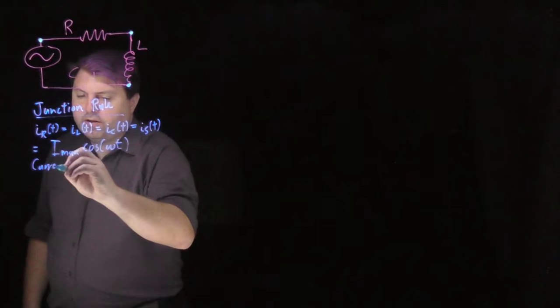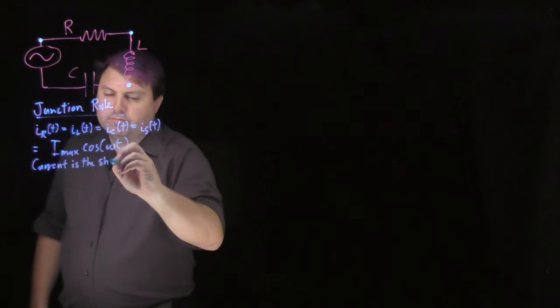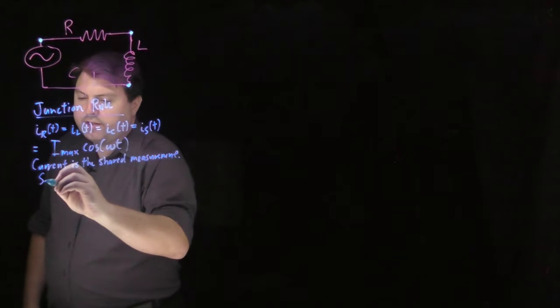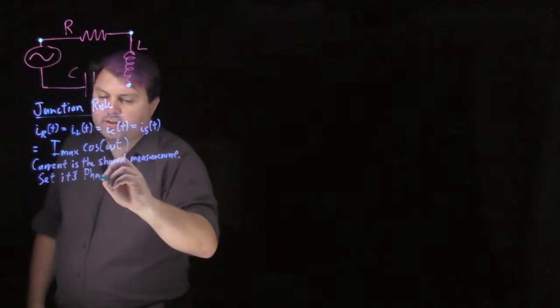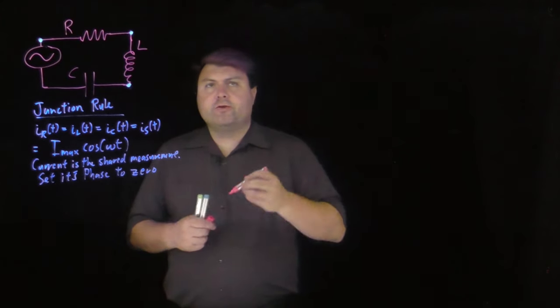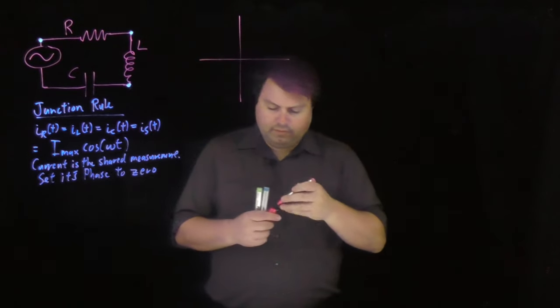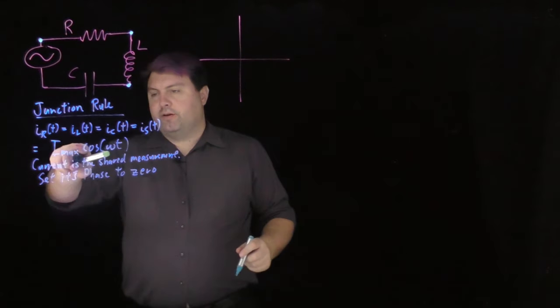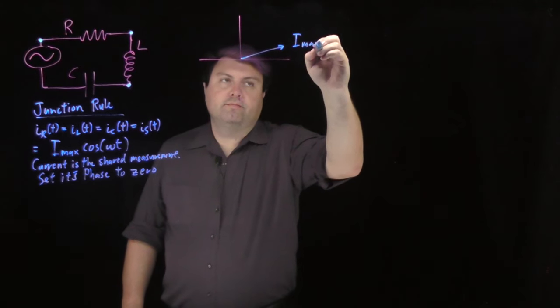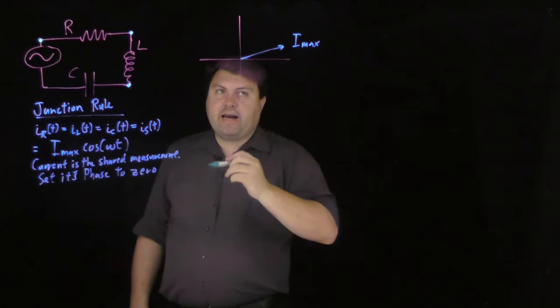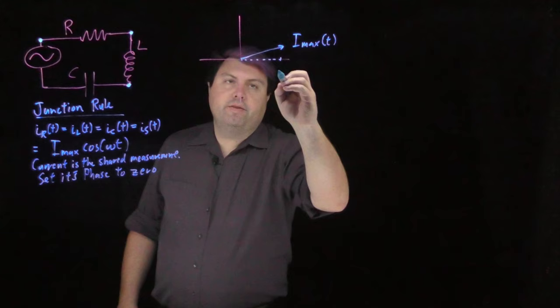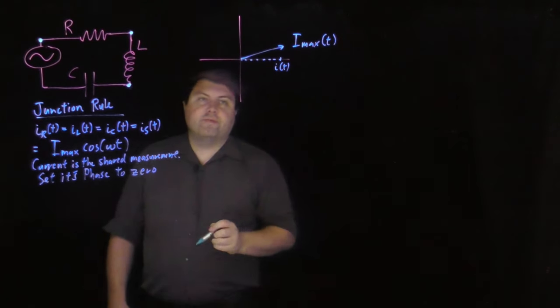So we're saying current is the shared measurement, and we can then set its phase to zero. So if we're drawing a phasor diagram, then we can draw a vector with value I_max. And what we are saying is that at this specific time, this will then be the current as a function of that time.